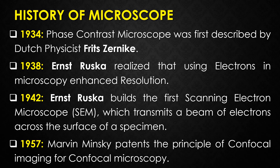In 1934, the phase contrast microscope was first described by Dutch physicist Frits Zernike. Later, in 1953, Frits Zernike was awarded the Nobel Prize in Physics for this work. Transparent biological materials were studied for the first time using the phase contrast microscope.